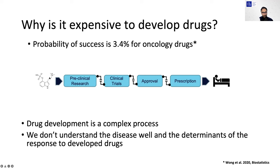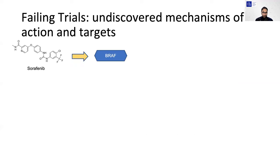Partly this is because drug development is a complex process. You have to do preclinical research, then clinical trials which are lengthy and expensive, then get approval, and then get prescribed — approval doesn't necessarily mean prescription, you have to be in guidelines usually. On top of this complex process, we don't really understand the disease well and the determinants of drug response. For example, there's a drug called sorafenib, developed as a BRAF inhibitor, which is mutated in many melanoma patients.